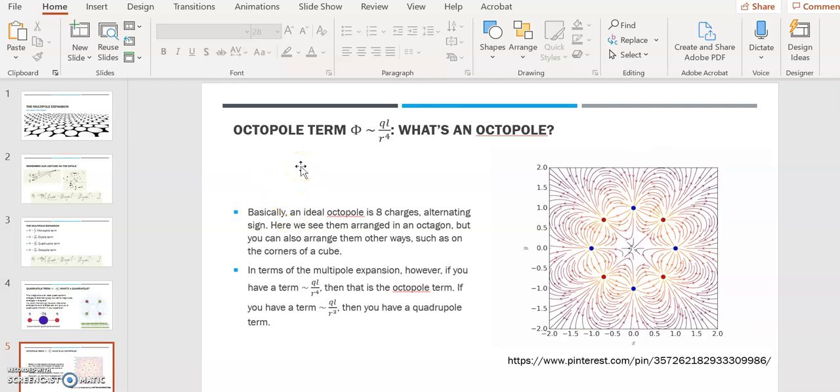Now, yet again, you can have other configurations of charges, even different numbers of charges. But as long as that proportionality is there to QL over R to the fourth, it's an octopole. For example, the thing off the top of my head that I can think of when I think of an octopole usually is a cube and then positive and negative charges on the corners of the cube, like maybe a sodium chloride ion crystal, with the sodium and the chlorine ions on the corners of the cube. I might think of that. Okay, so that's where the terms came from. Eight charges is an octopole.